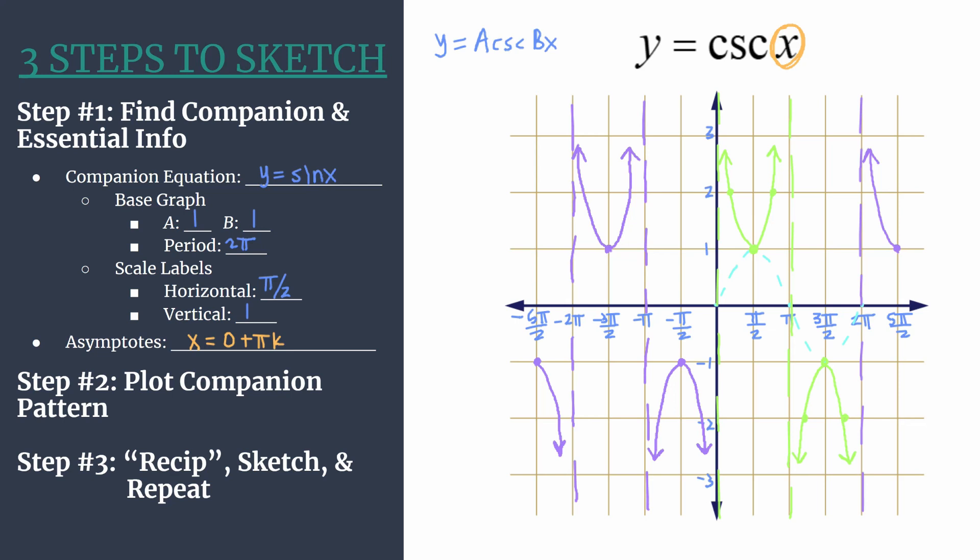This is several cycles of y equals cosecant x. Hopefully this helped you better understand the three steps to sketch method for the basic unshifted cosecant graphs. I will post several more worked out examples of tougher cosecant unshifted graphs, so be sure to check those out. I'll put links to the playlist in the video description. Also, check out some of the other trig graphing. I'll put links for that as well. Thanks so much for watching.